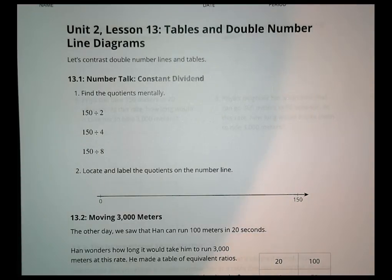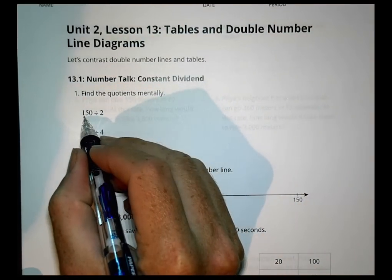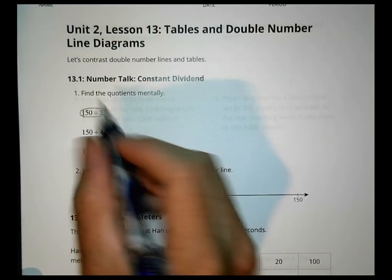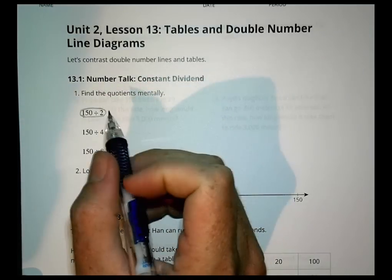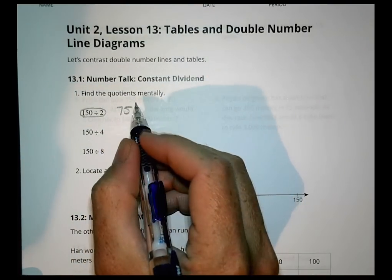We began with some number talks, finding some quotients mentally. We take a look at 150 divided by 2. When I think of 150, I'm always thinking of $1.50, and I know that half of that is going to be 75.